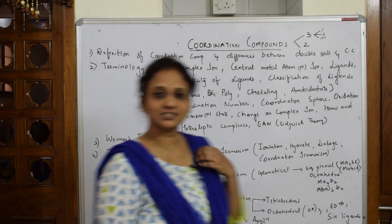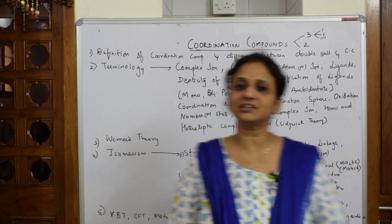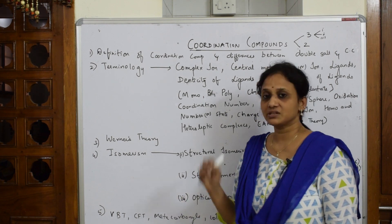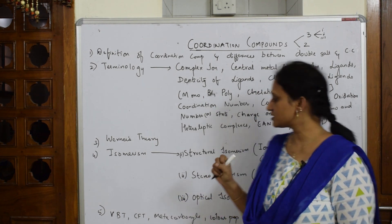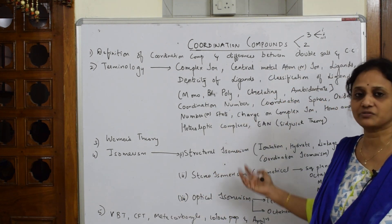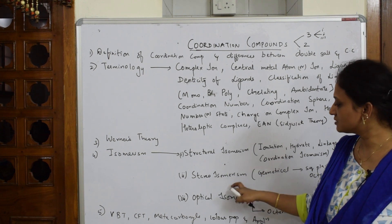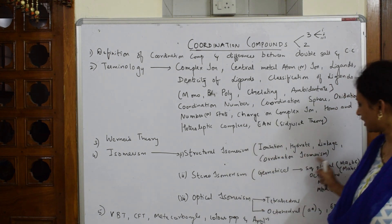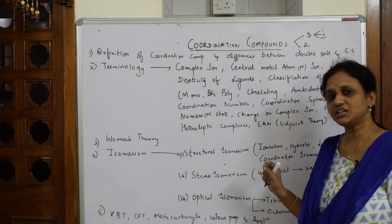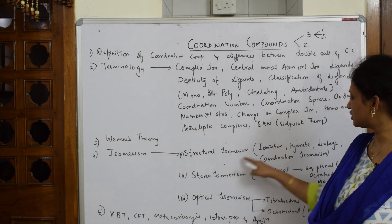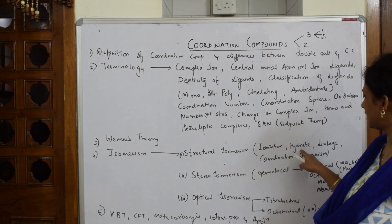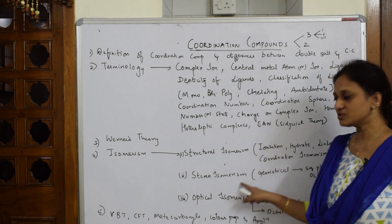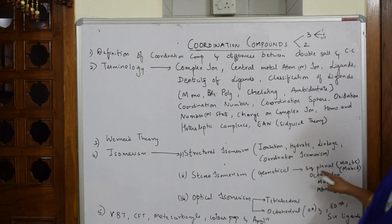We'll also cover the Effective Atomic Number, that is EAN — Sidgwick's theory. After that, I'll be teaching Werner's theory, which is a very important question. It's the simplest theory but we must understand the concept. Then we move into isomerism — structural, stereo, and optical isomerisms.